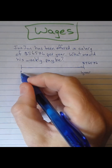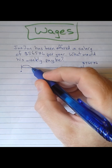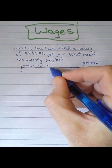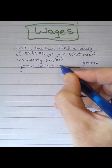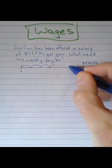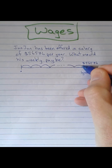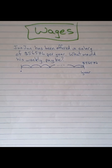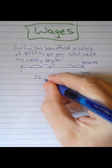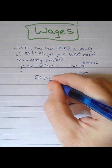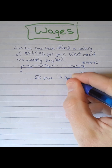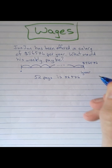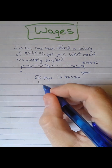So Junjun is going to receive one pay, two pays, three pays, four, five, six, and so on, all the way up to 51 and then a 52nd week of pay in this one year. So that means $56,576 is going to be what we get from 52 pays.